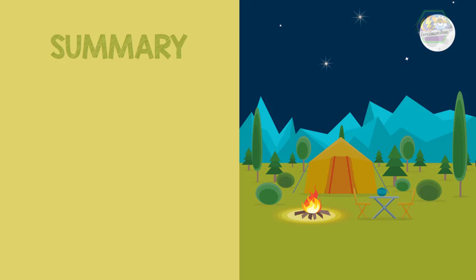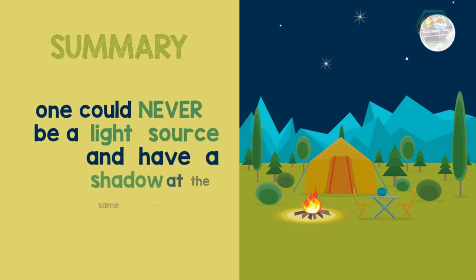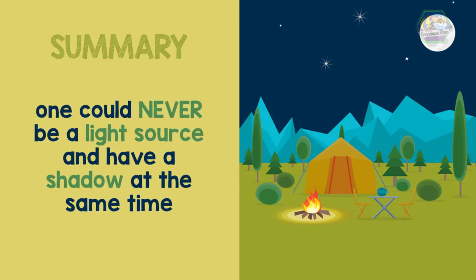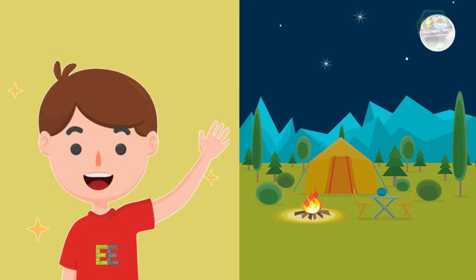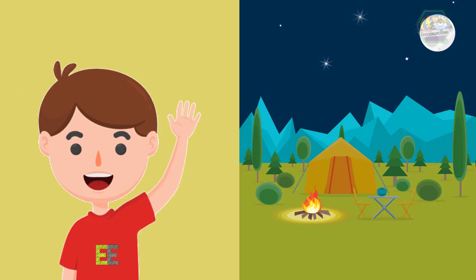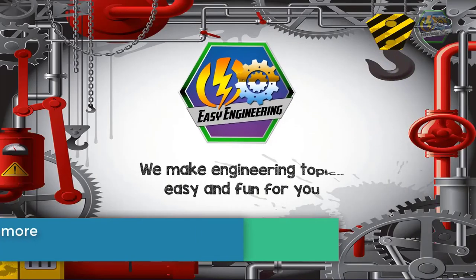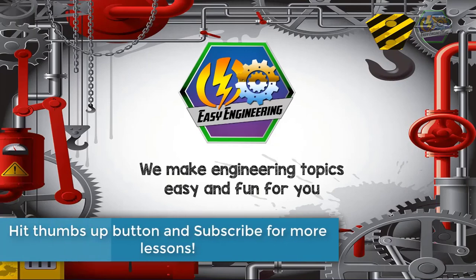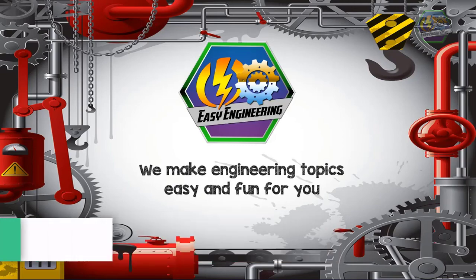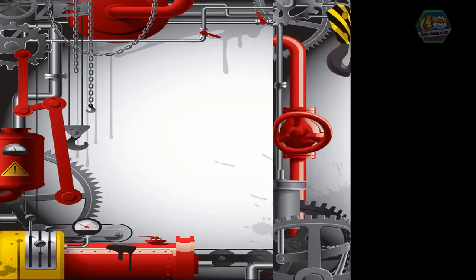So as a summary, one could never be a light source and have a shadow at the same time — it could definitely be either, but not both. And that is all for now. I hope you learned something today. Once again, this is Easy Engineering.